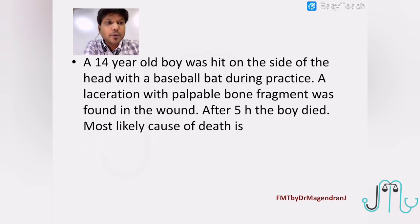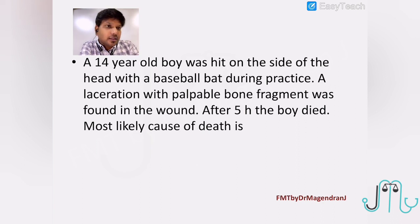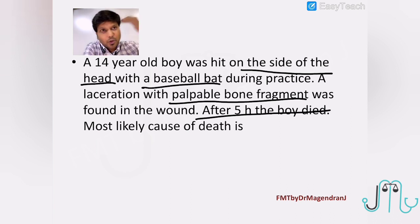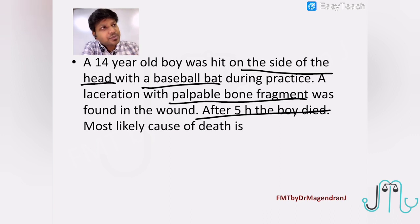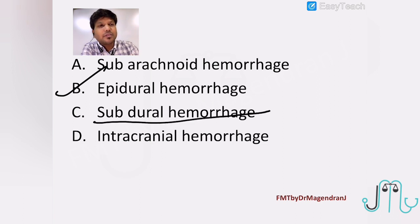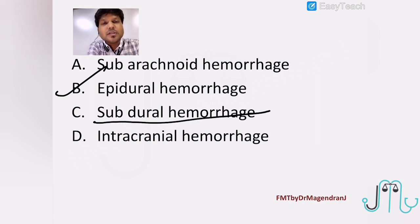A 14-year-old boy was hit on the side of the head with a baseball bat during practice; a laceration with a palpable bony fragment was found in the wound. After 5 hours, the boy died. The clue here is the hit is on the temporal region with a baseball bat — blunt trauma with a fracture — and within 5 hours the boy died. This is the typical case of acute epidural hemorrhage, where a blow to the side of the head fractures the temporal bone, and under the pterion, the middle meningeal artery is likely to get ruptured, causing death within a few hours. It is not subdural, because subdural hemorrhage is not commonly seen with blow trauma — it is preferably seen with acceleration-deceleration impact involving jerking and shaking.